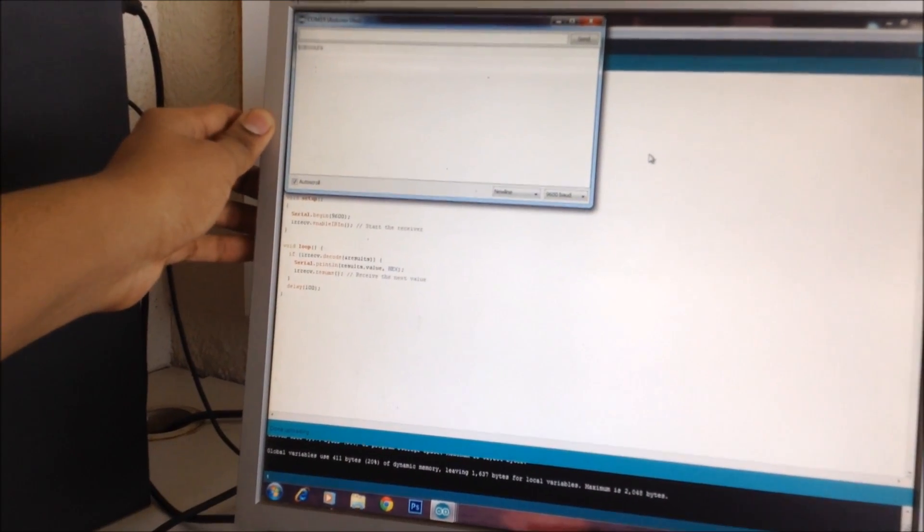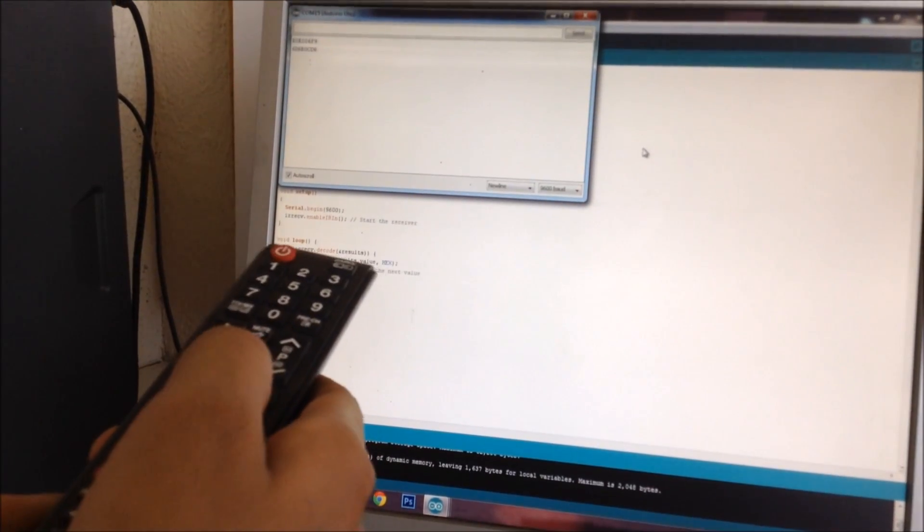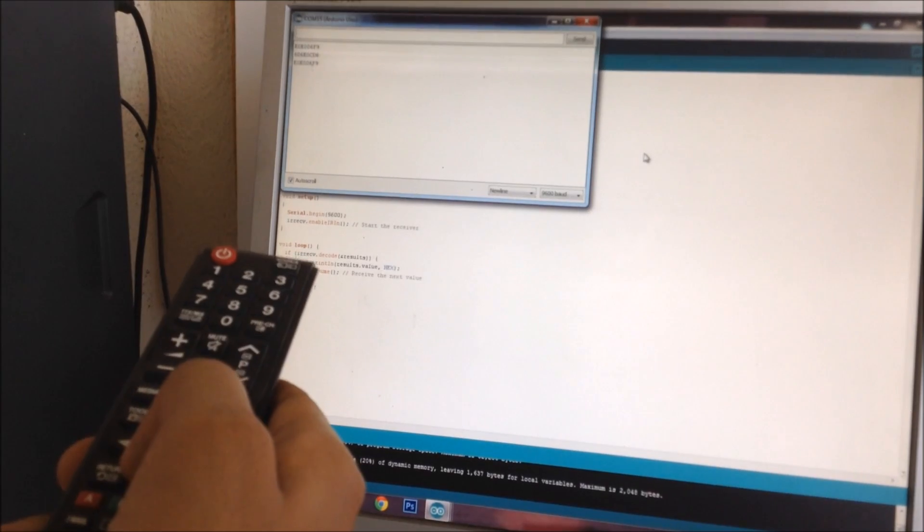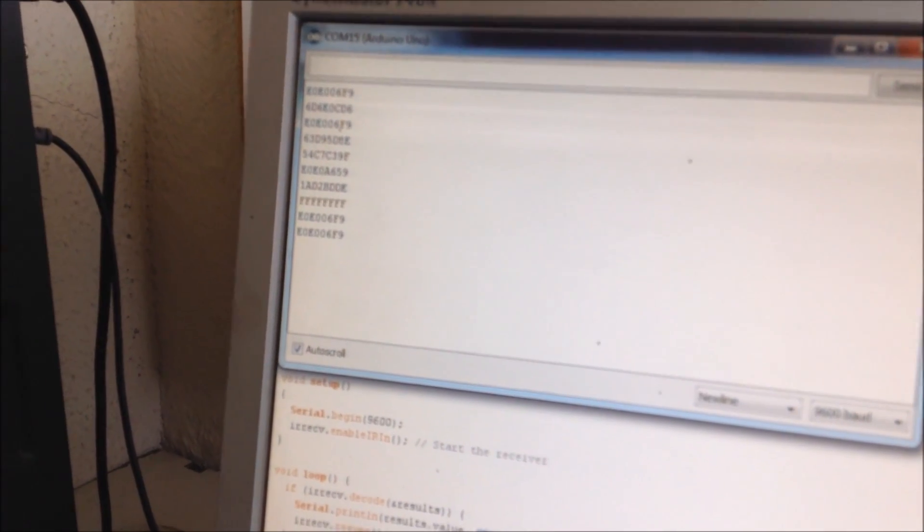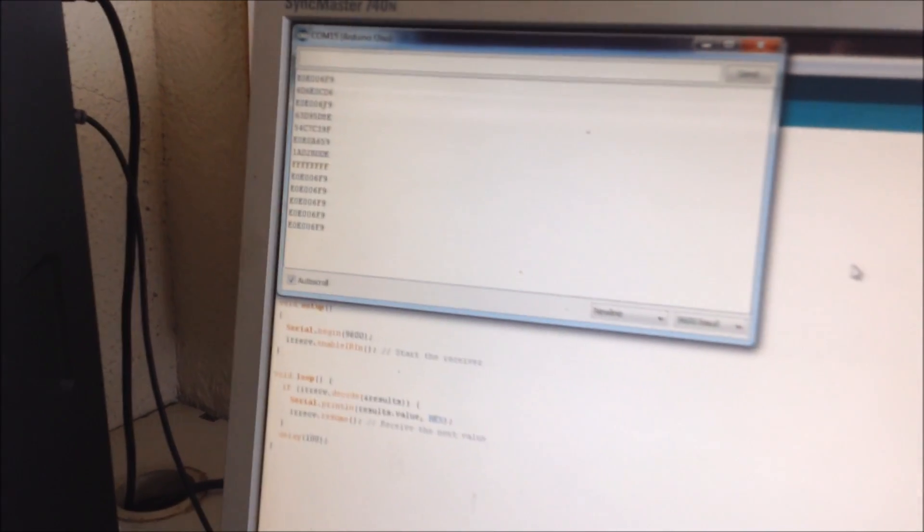We have the TSOP IC here. And I'm going to use this remote. Now whenever I press a button, it's going to show the hexadecimal code right here. And it will give you a different code for every button you press. Now you need to make sure that you're pointing your remote right at the receiver, or else it might give different values.